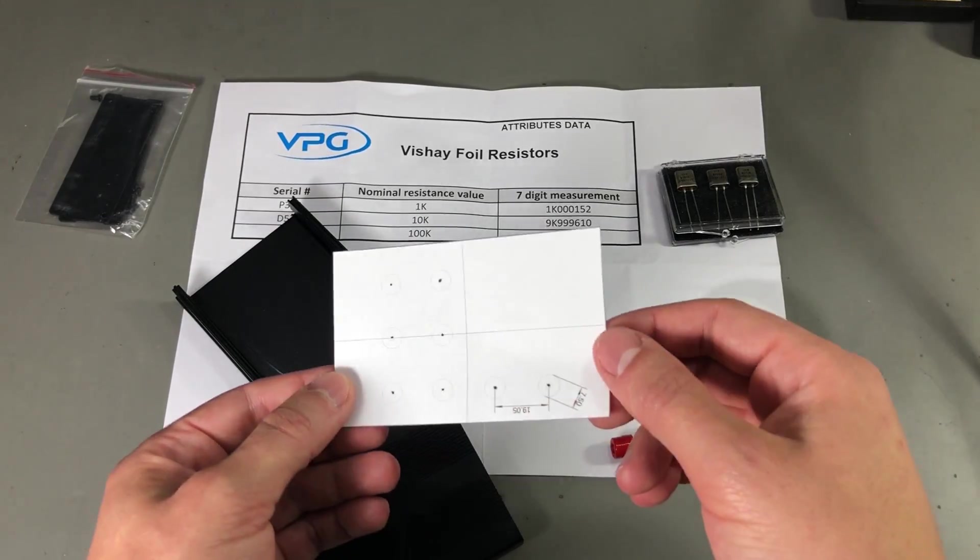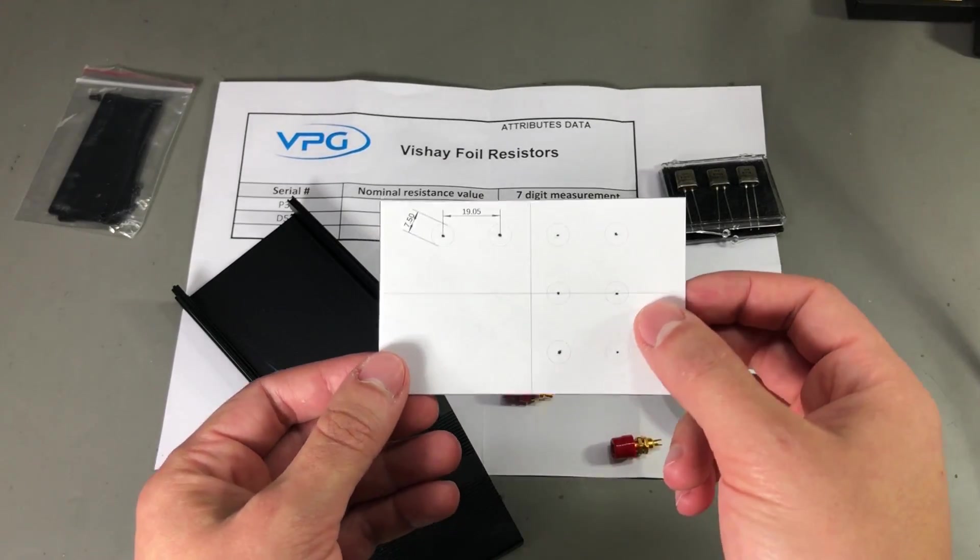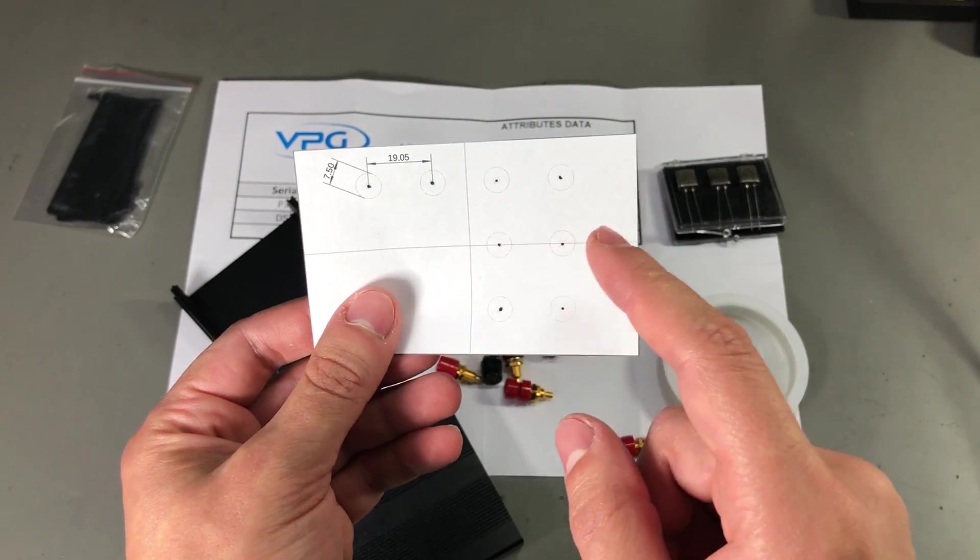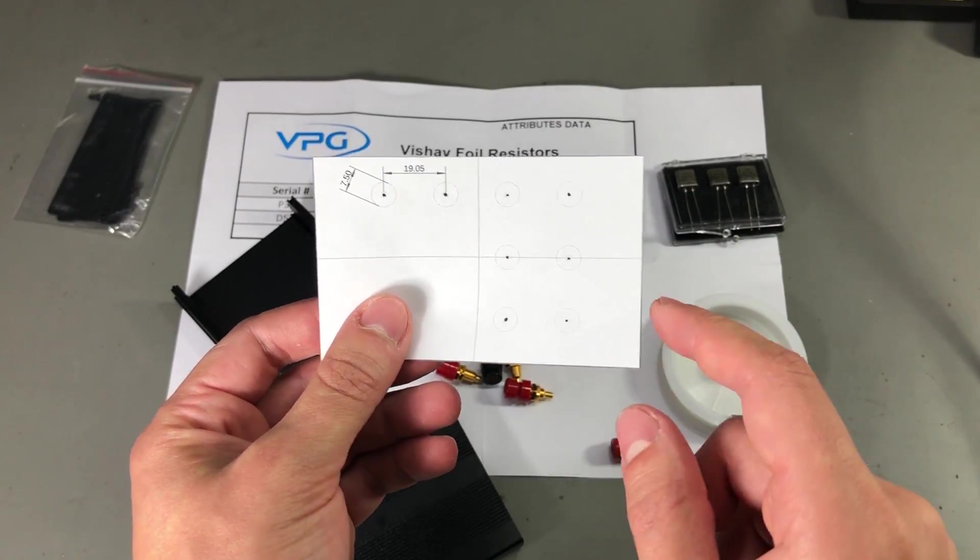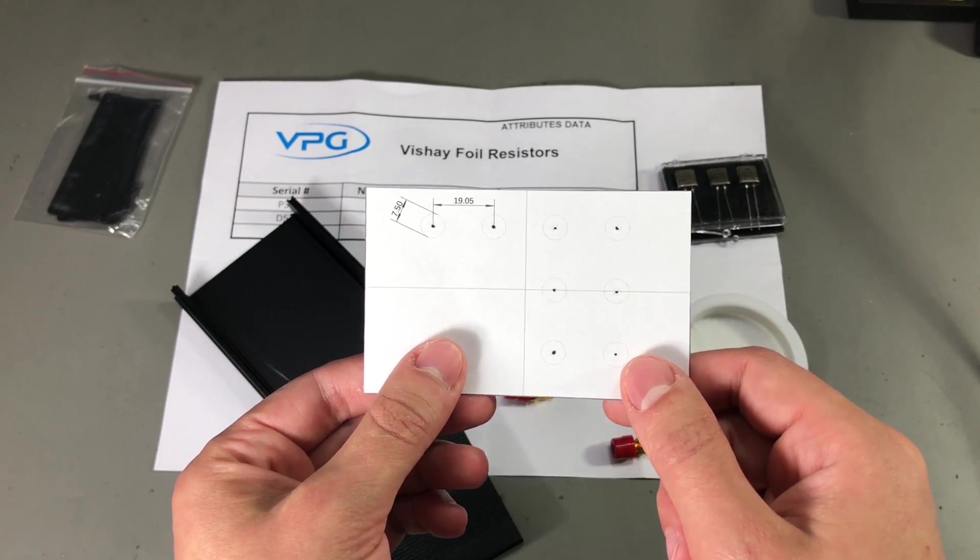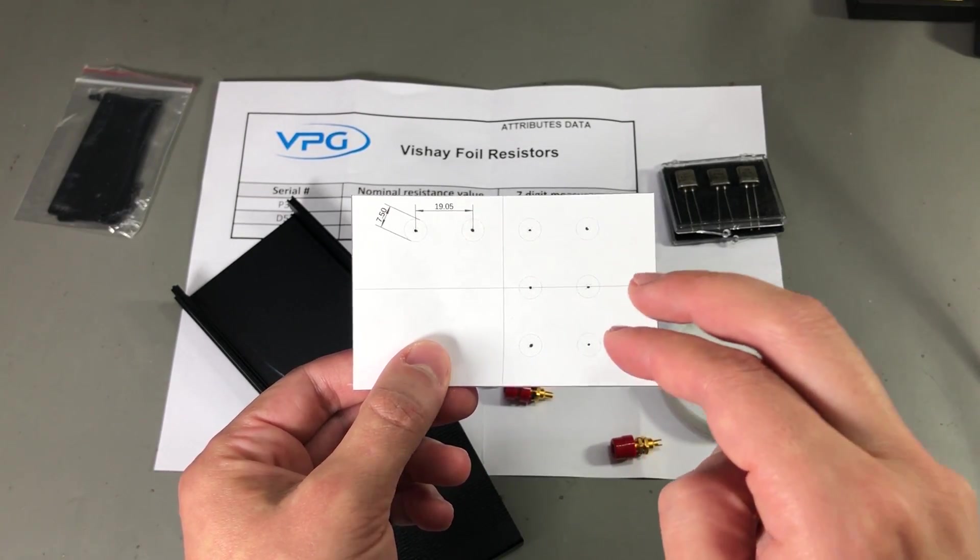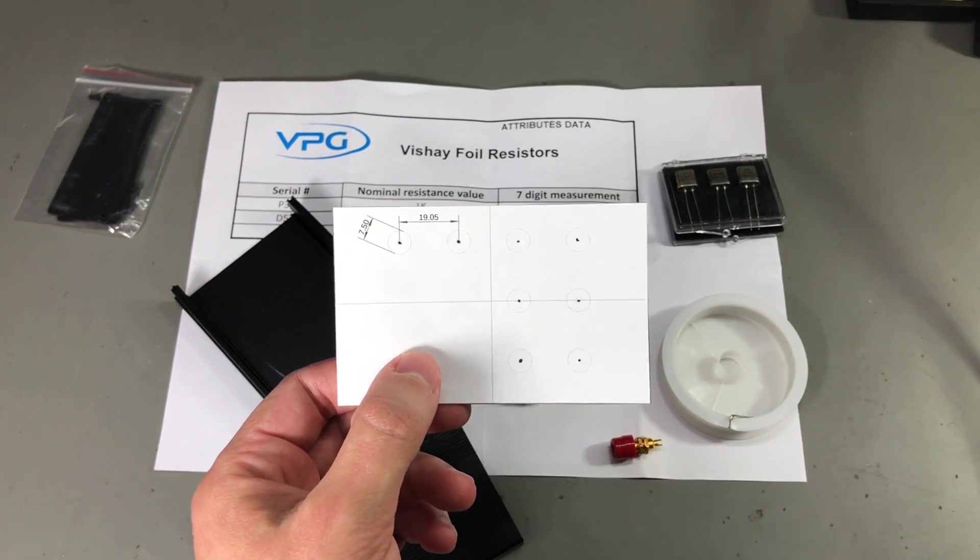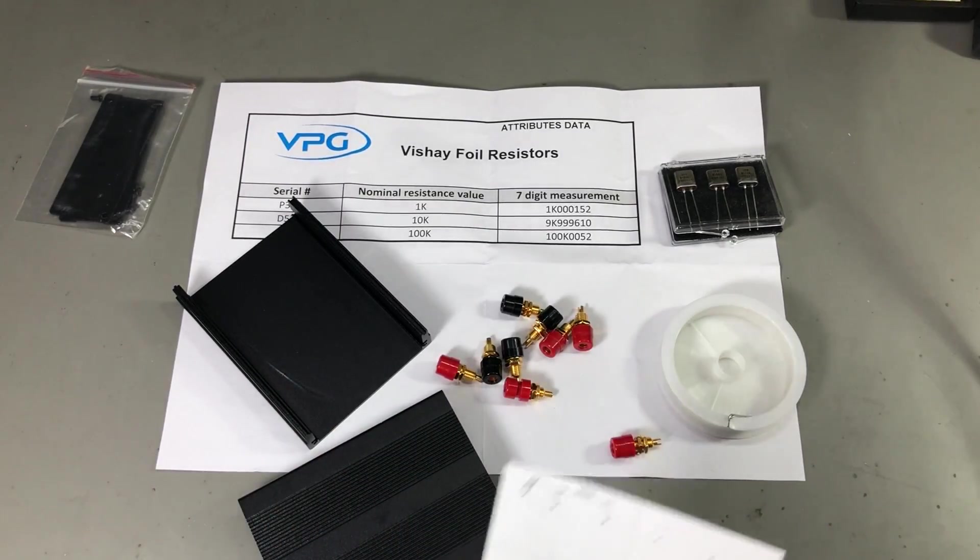For drilling the enclosure, I have prepared this template, where I have the binding post spaced at exactly 3 quarters of an inch or 19.05 millimeters away from each other. This way I can use double banana connectors, if needed, and it makes it neat and tidy.